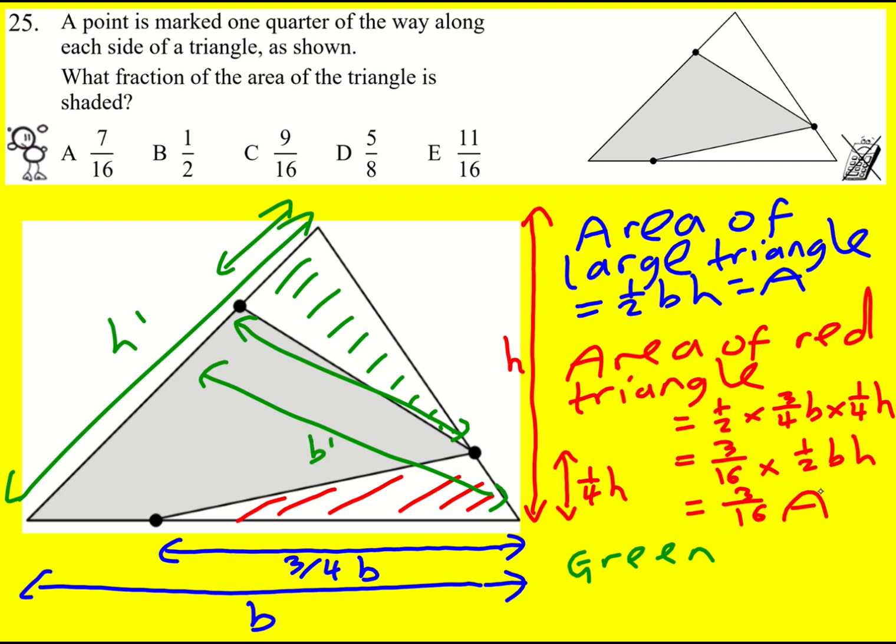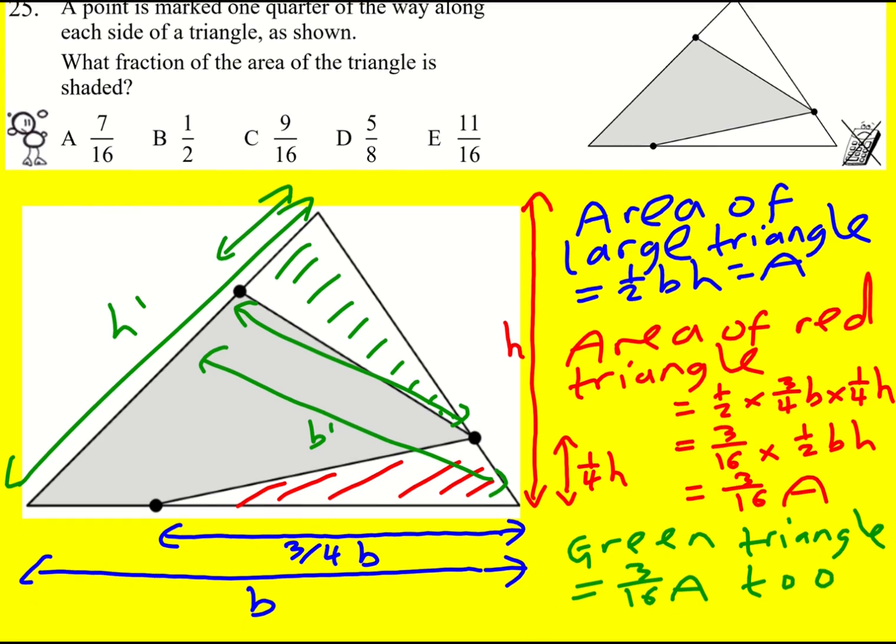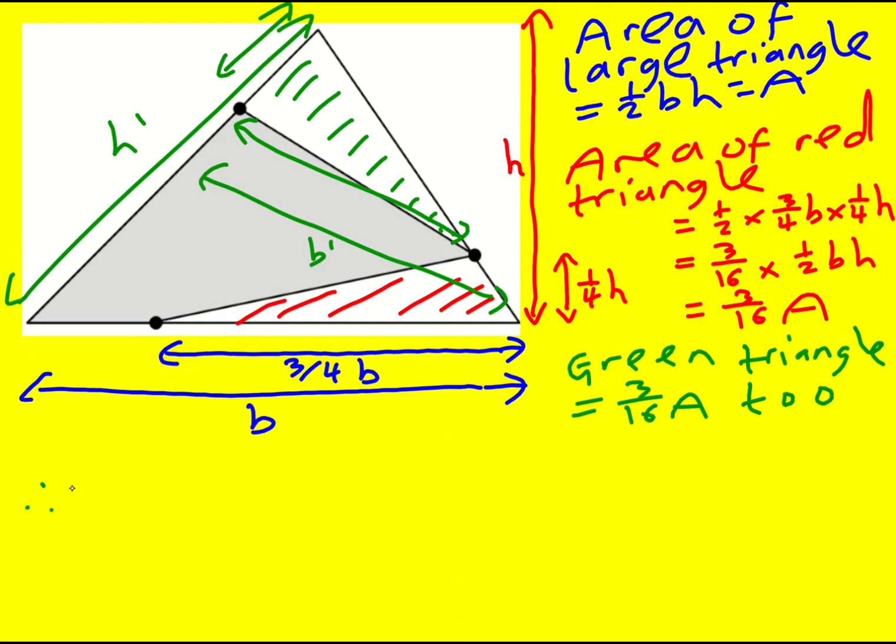But ultimately I'm still going to get three sixteenths of the area. The green triangle, arguing along similar lines, is also going to equal three over sixteen times A. And that means the unshaded area is going to equal six over sixteen A, because I've just added them together, which is three over eight A.